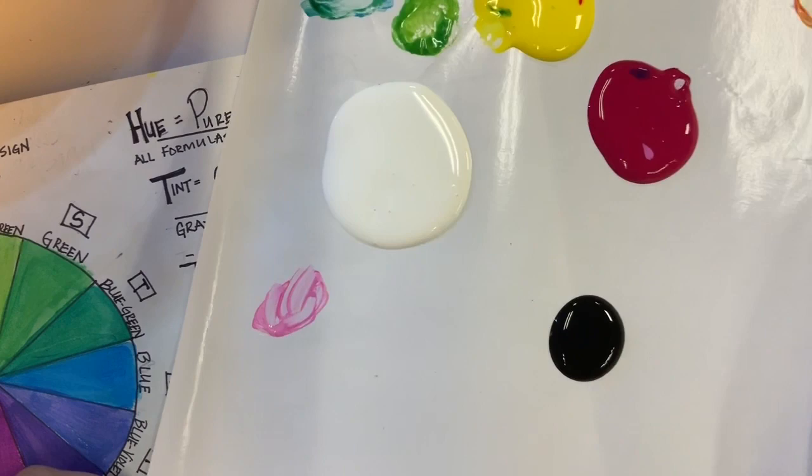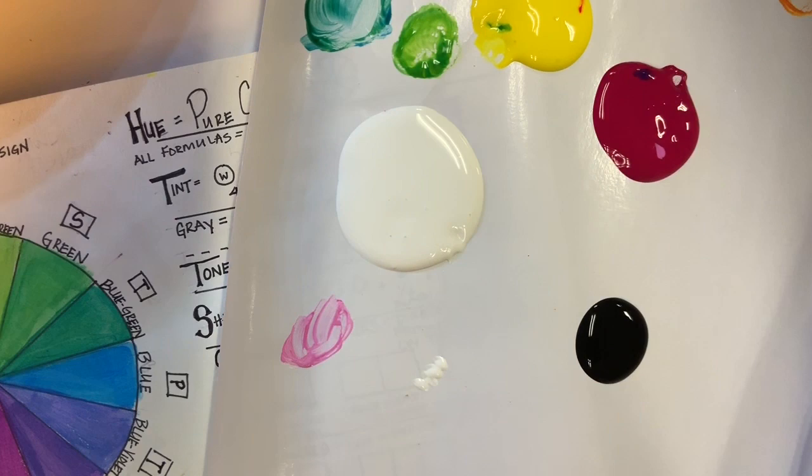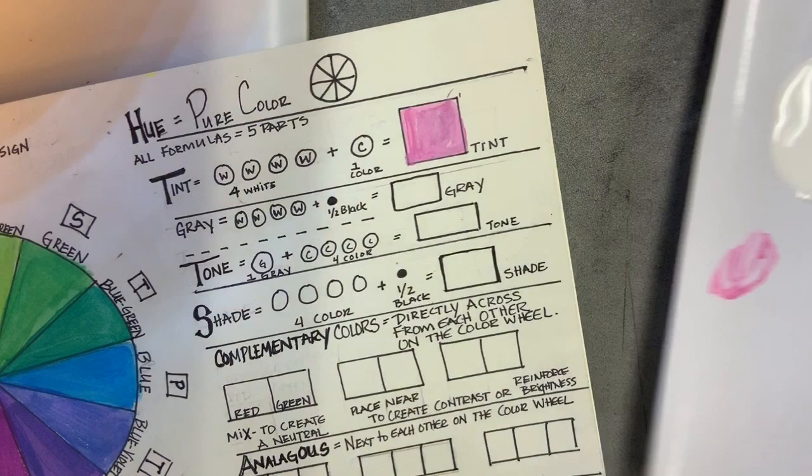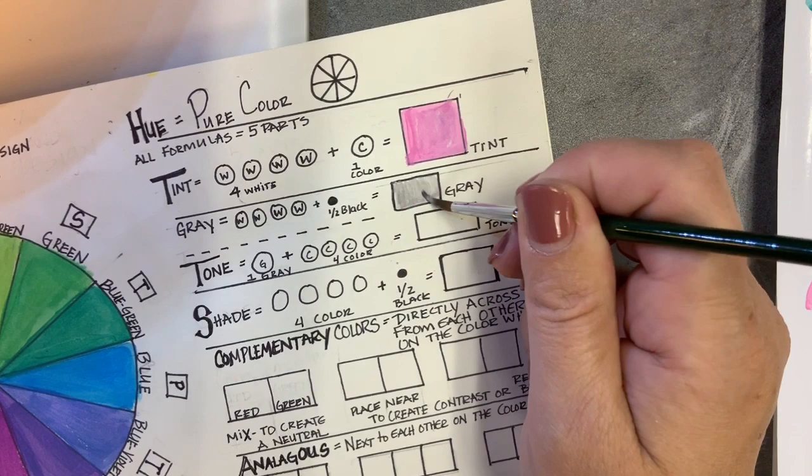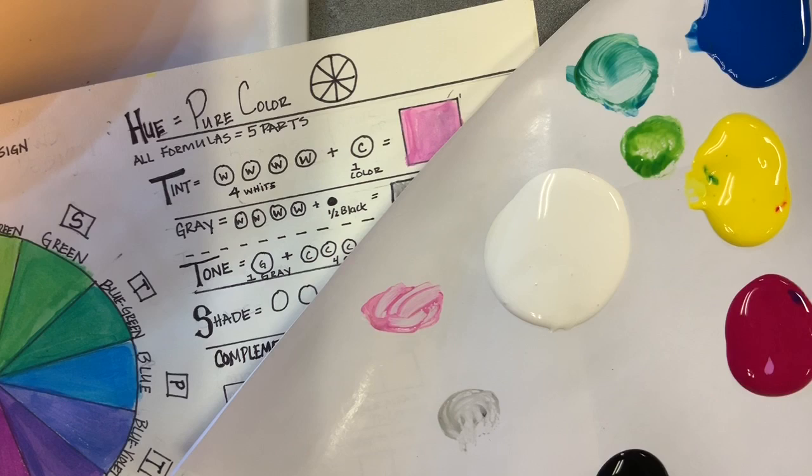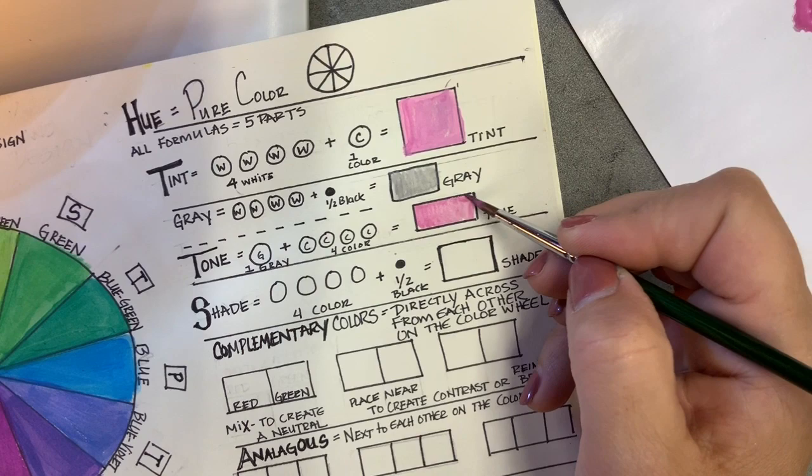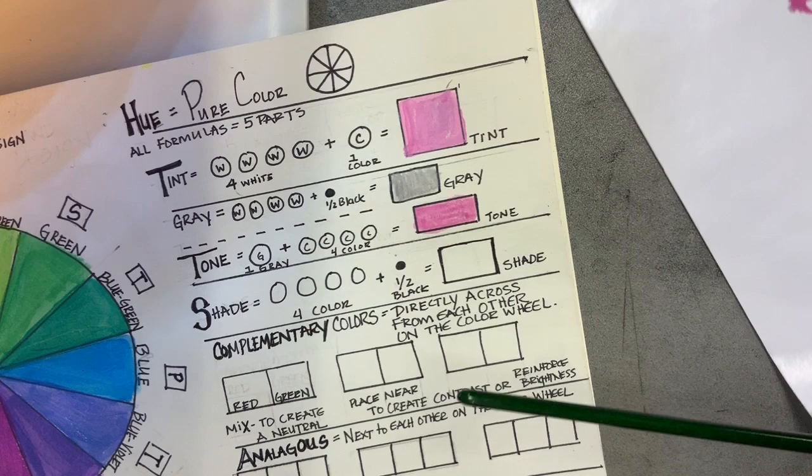Here we're going to do four dots of white with a half a dot of black, and that's going to make a really nice gray. So I'm going to have you actually mix a gray, because if we make a tone, a tone is one part gray to four parts color. At least in this formula. Again, when we're working on value scales, it could be maybe two parts gray and three parts color, but for this experiment I just want you to try these formulas.